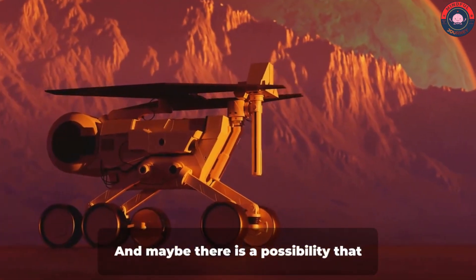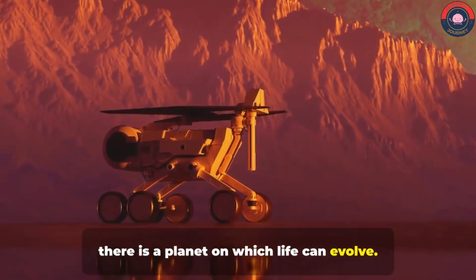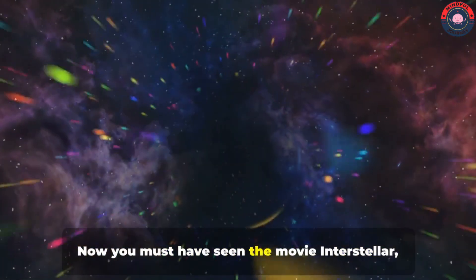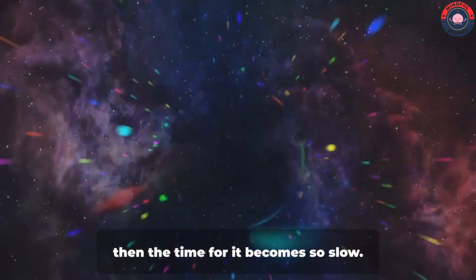And maybe there is a possibility, that among those 10,000 planets, there is a planet on which life can evolve. Now you must have seen the movie Interstellar, so if someone goes to a planet near the black hole, then the time for it becomes so slow.